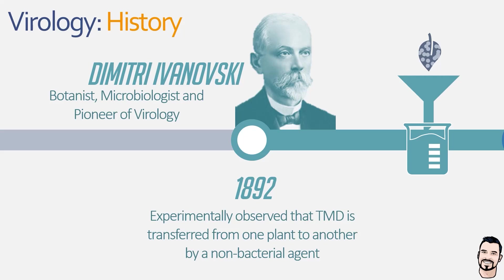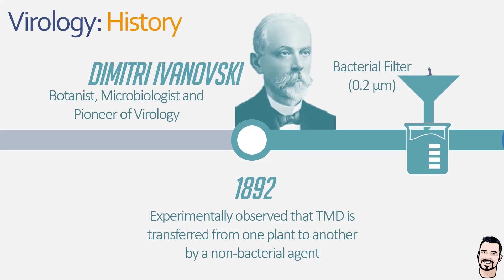In order to do this, he took sap from a plant with the disease and passed it through a bacterial filter. This would stop any infectious bacteria from passing through, but anything smaller would be collected. After filtering the sap, he showed that the filtrate was still infectious and capable of causing disease, which was one of the first indications that something smaller than bacteria — maybe a toxin — could cause infectious diseases.